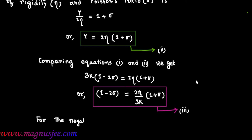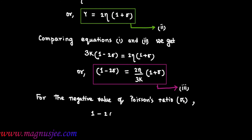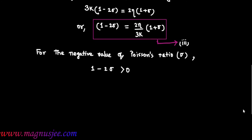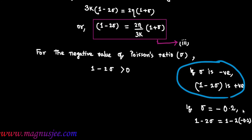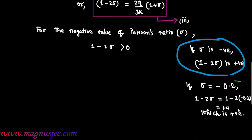For the negative value of Poisson's ratio sigma, 1 minus 2 sigma is greater than 0 — that means 1 minus 2 sigma is positive. For example, if sigma equals minus 0.2, then 1 minus 2 sigma equals 1 minus 2 times (minus 0.2), which equals 1.4, which is positive.